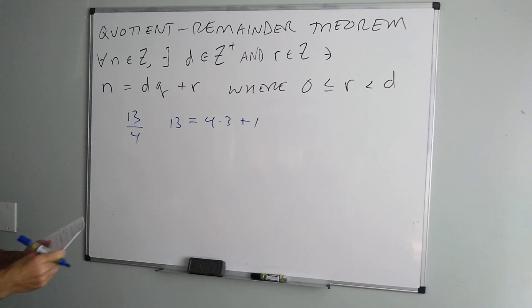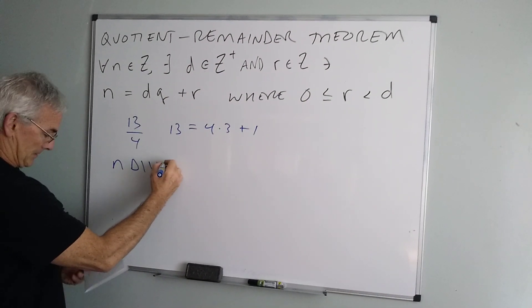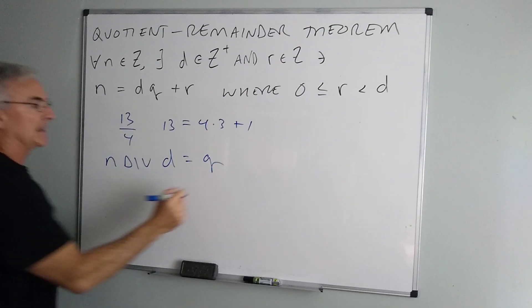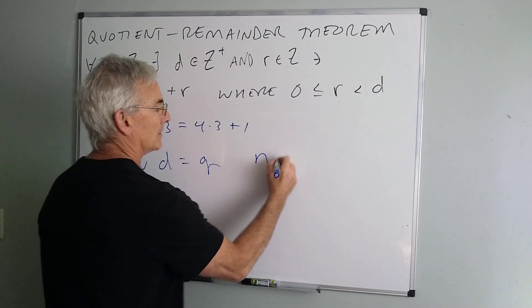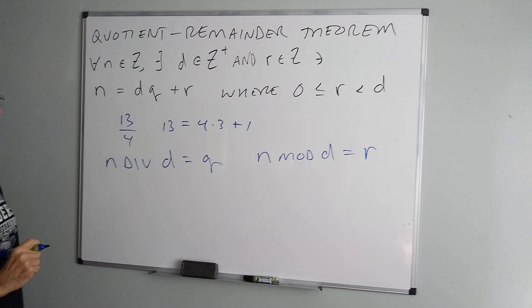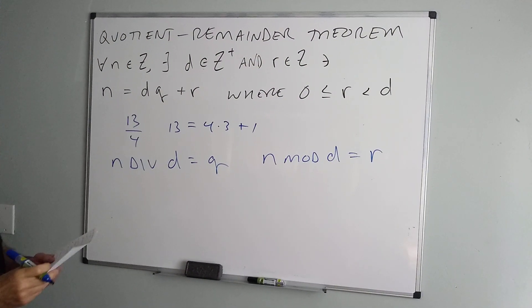So the formal notation we generally would say here is that n div d equals q and n mod d equals r. R being the remainder, mod being the more important of the two, that's the one we're going to use in general.